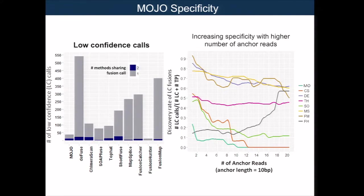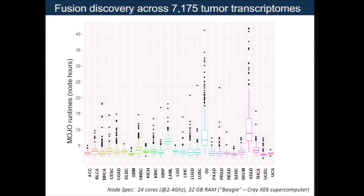What I'm showing is a false discovery rate plot. The anchor length is a proxy for confidence in a fusion call. With an increasing number of anchor reads, you expect to gain more specificity, but I say it's a weak proxy, because you can have a fusion call with only one anchor read if it's lowly expressed. We've taken this algorithm and ran it on nearly 7,200 tumor transcriptomes. The median run time across all methods is around four to five hours for an 80 million paired-end read sample, run on a machine where each node has 24 cores and 32 gigs of memory.